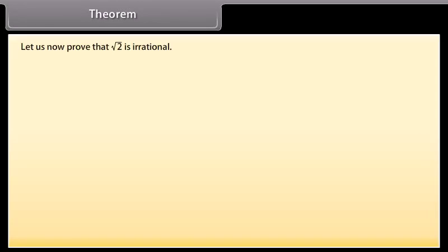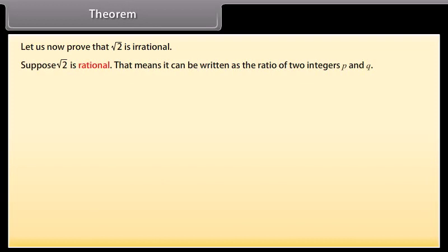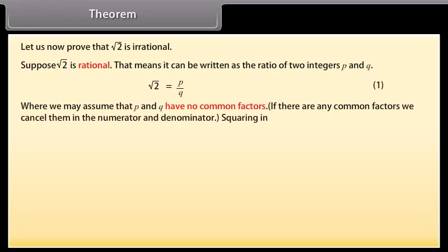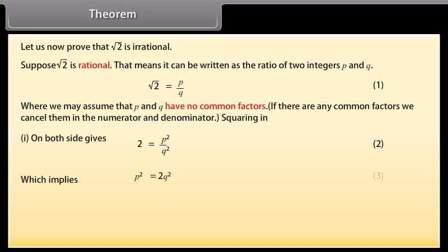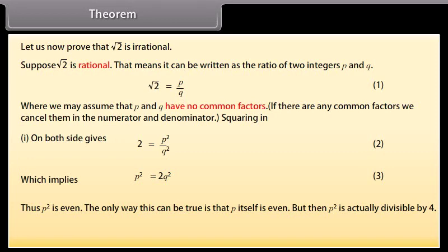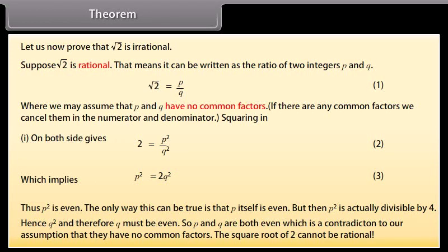Theorem: Let us prove that √2 is irrational. Suppose √2 is rational — that means it can be written as the ratio of two integers p and q: √2 = p/q (equation 1), where p and q have no common factors. Squaring both sides gives 2 = p²/q² (equation 2), which implies p² = 2q² (equation 3). Thus p² is even, so p itself must be even. But then p² is divisible by 4, hence q² and therefore q must also be even. So p and q are both even, which contradicts our assumption that they have no common factors. Therefore √2 cannot be rational.